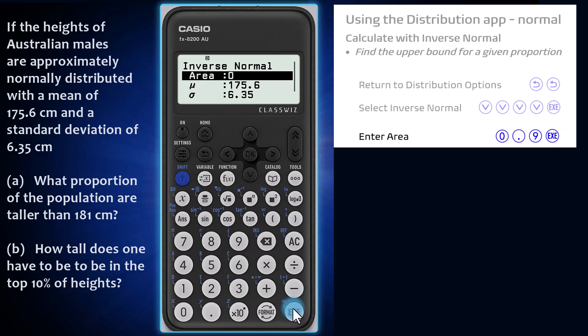First, enter the area for which we seek the upper boundary, the lower boundary being negative infinity. This area represents a proportion of a population or a probability depending on the question, and is entered as a value between zero and one, not as a percentage.